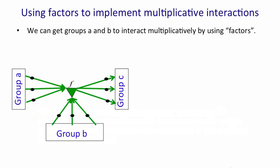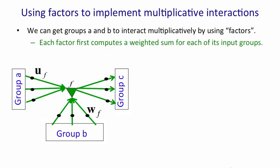So here's how we're going to do it. We're going to have things called factors, and they're going to be denoted by this little triangle with an F above it. What that factor means is that group A and group B interact multiplicatively to provide input to group C. So what each factor does is it first computes a weighted sum for each of its two input groups. So we take the vector state of group A, which I'll just call A, and we multiply that by the weights on the connections coming into the factor. In other words, we take the scalar product of the vector A and the weight vector U, and that gives us a number at the left-hand vertex of that triangle.